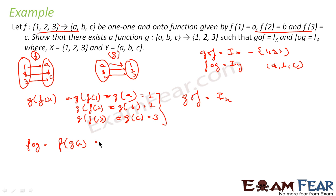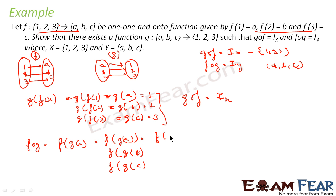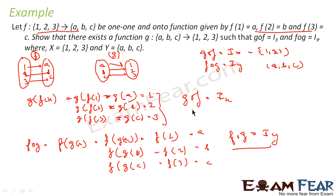Similarly, fog(x): input is from {a,b,c}, so f(g(a)) = f(1) = a, f(g(b)) = f(2) = b, and f(g(c)) = f(3) = c. So fog gives back a, b, c — the elements of Y — meaning fog = I_Y. Thus we have proved that there exists a function g where g(a)=1, g(b)=2, g(c)=3, such that gof = I_X and fog = I_Y.